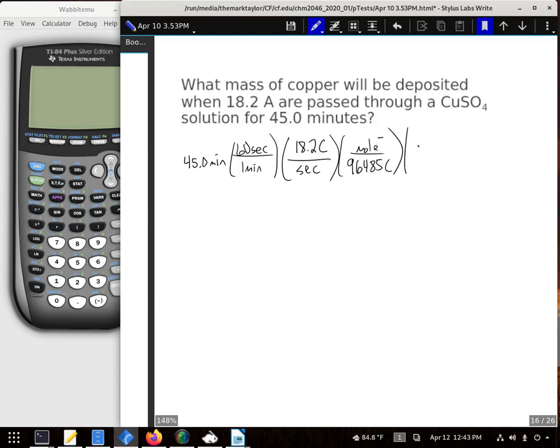And in this case, to get our copper from copper two plus, we would need two electrons. And then one mole of copper happens to weigh 63.55 grams.